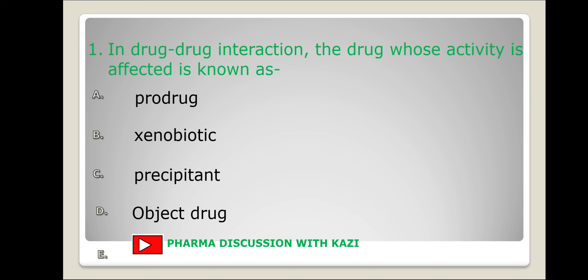A prodrug is a compound that after administration is metabolized into a pharmacologically active drug. A xenobiotic is a chemical substance found within an organism that is not naturally produced or expected to be present. Precipitants are agents which precipitate an interaction. An object drug is the drug whose activity is affected by the interaction. So the correct answer is object drug.